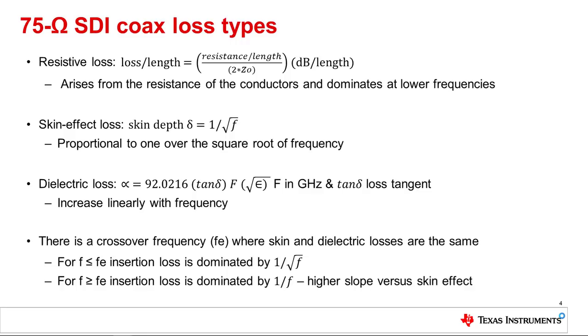For a frequency less than crossover the skin effect is more dominant by one over the square root of f. At frequency above fe the dielectric loss is more dominant. Dielectric loss has a higher slope than skin effect over frequency. Note the lower cable capacitance and inductance the higher the crossover frequency. A higher crossover frequency generally indicates a higher quality cable.